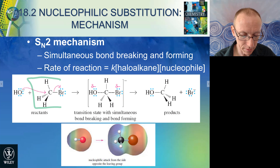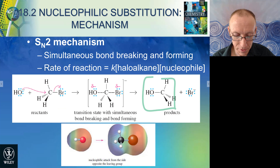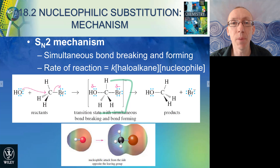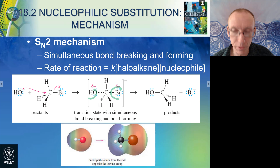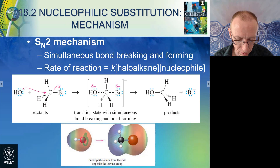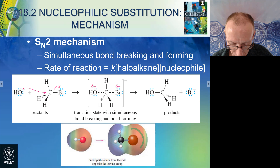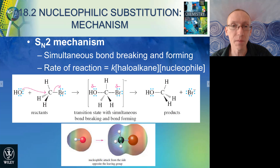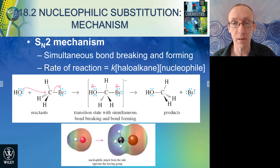Even though the starting material is tetrahedral and the product is tetrahedral, the transition state for this reaction is actually bipyramidal, with the three groups on the central carbon lying in a plane, and then the incoming group and the leaving group both being orthogonal to that plane. Looking at this in terms of electron densities: hydroxide has a very large excess electron density on the oxygen, so it's delta negative. The halogen is pulling electron density away, so the carbon atom is partially positively charged, and we get that charge interaction between the two.